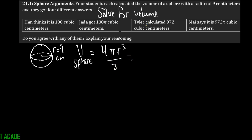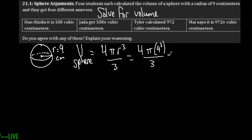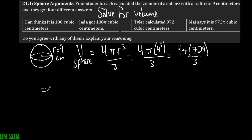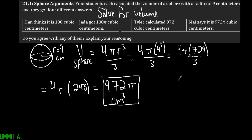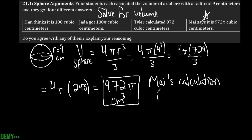Plugging in: V equals four pi times nine to the third power divided by three. Nine cubed is nine times itself three times, which is 729. So we have four pi times 729 over three. Dividing 729 by three gives 243, and four times 243 equals 972 pi cubic centimeters. So Mai's calculation is correct.